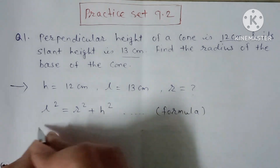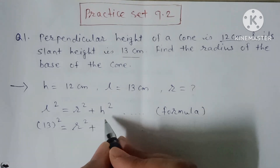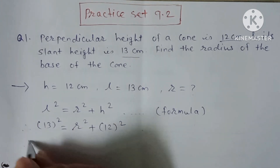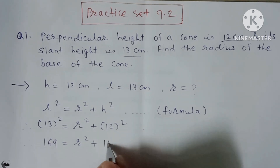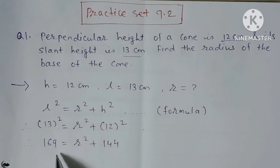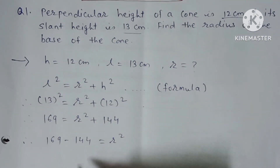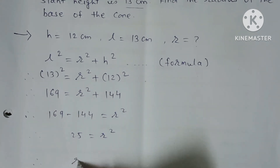Putting in the values: l = 13, so 13² = r² + 12². That gives 169 = r² + 144. Since 144 is positive, it moves to the other side as negative: 169 − 144 = r². The subtraction gives 25, so r² = 25. Since 25 is the square of 5, r = 5 cm.